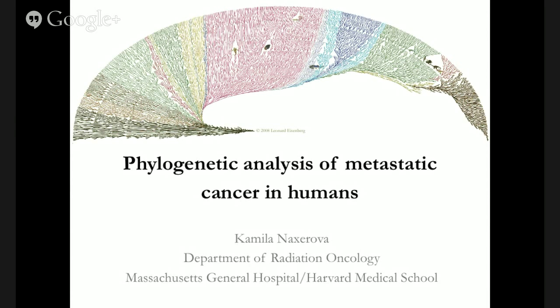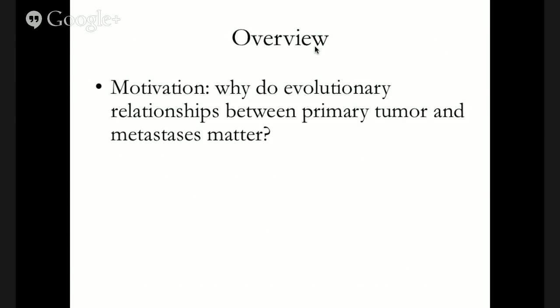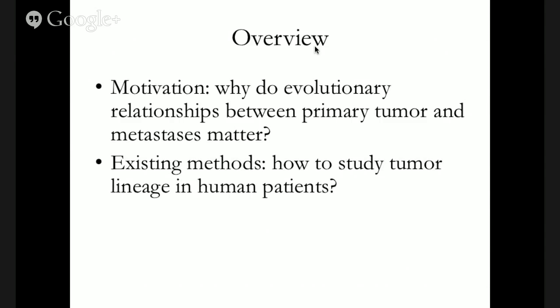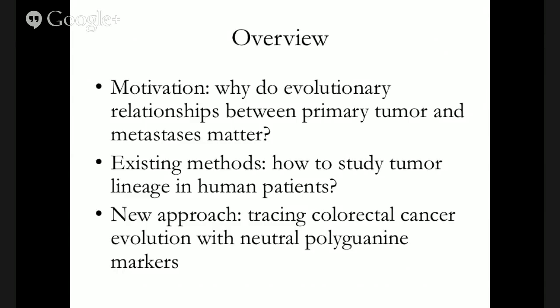What I'll tell you about is our effort to understand in greater detail how metastatic cancer evolved in human patients — that is, how cancer cell populations give rise to each other in order to form the large numbers of metastases that end up being the ultimate source of mortality in cancer patients. I'll explain why we care about evolutionary relationships between primary tumors and metastases, illustrate this with real-world clinical examples, give a brief overview of existing methods, and then introduce the new approach we've taken to trace lineage in colorectal cancer with neutral genetic markers.